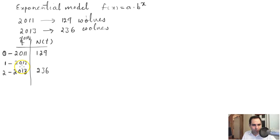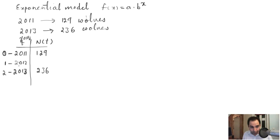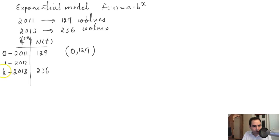Now you have two points on the graph of this function. One point is t = 0 and n(t) = 129. The other point is t = 2 and n(t) = 236.